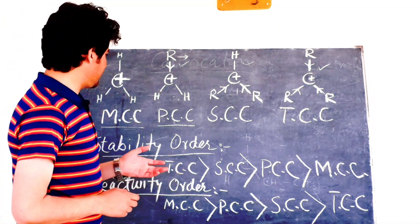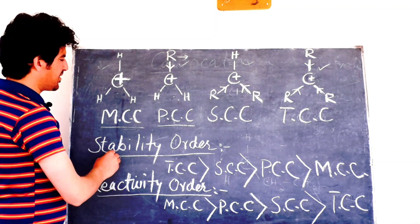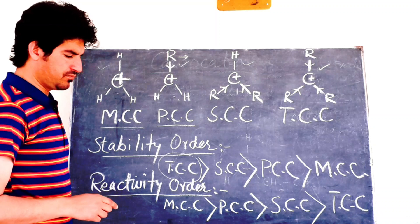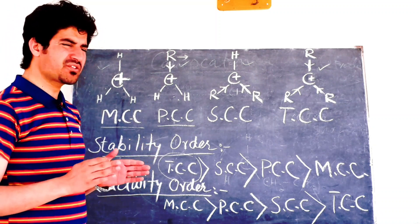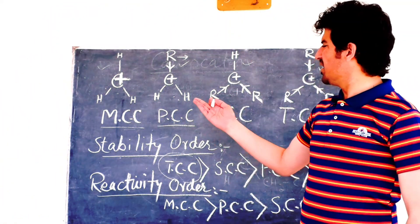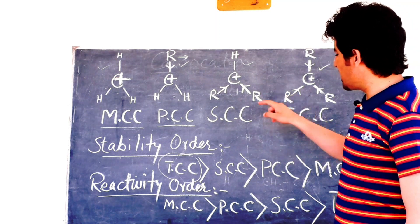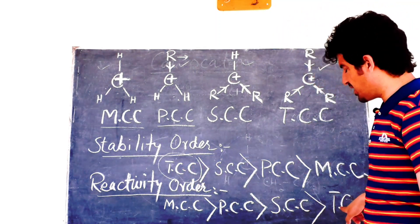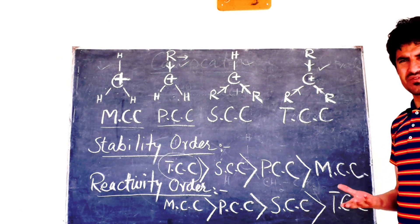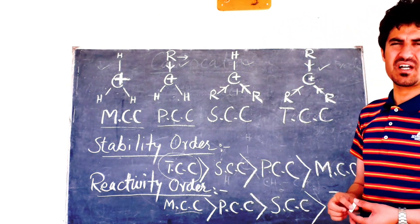The question is: when the tertiary carbocation is more stable, why is it more reactive? This question is completely wrong. Students have asked that if the tertiary carbocation is more stable, then why is it more reactive? No — the reactivity of the tertiary carbocation is actually least. Tertiary carbocation has the least reactivity, while the methyl carbocation has the highest reactivity.